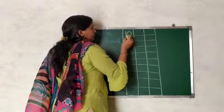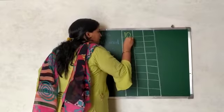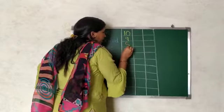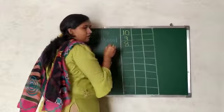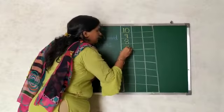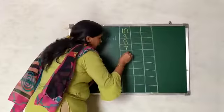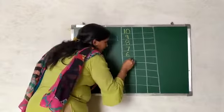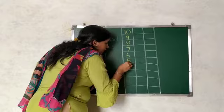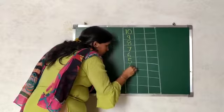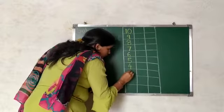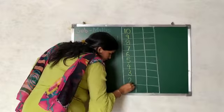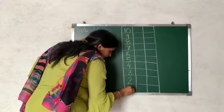After that we will write number 9, then 8, then 7, then 6. Yes, 5, 4, 3, 2 and 1.